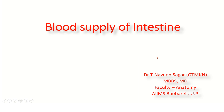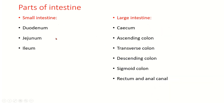In this session, we will be studying the blood supply of the intestine, especially the arterial supply, because there is a separate class called portal vein and portocaval anastomosis which mainly deals with the venous drainage. The parts of the intestine include small intestine: duodenum, jejunum, ileum; and large intestine: cecum, appendix, ascending colon, transverse colon, descending colon, sigmoid colon, rectum, and anal canal. We will see the individual blood supply of all these parts.